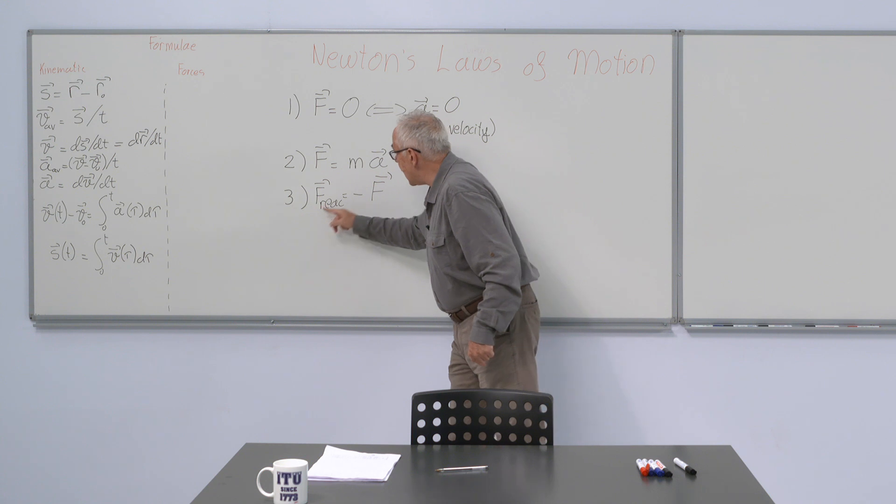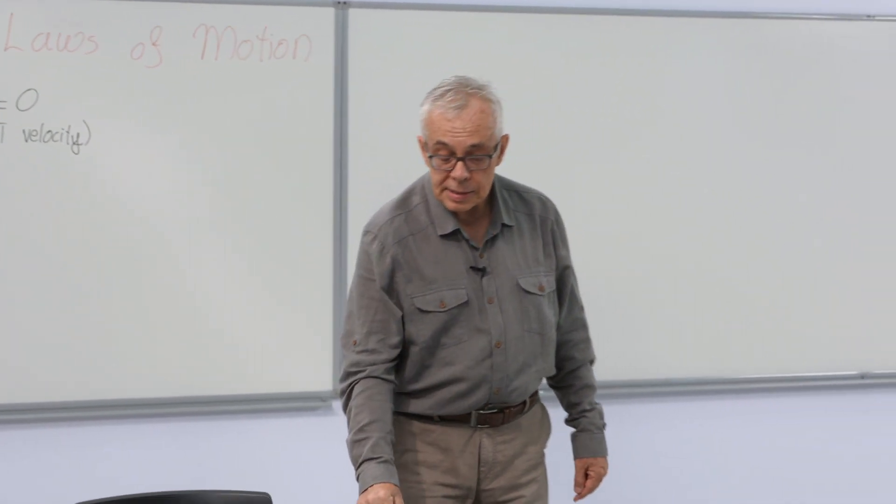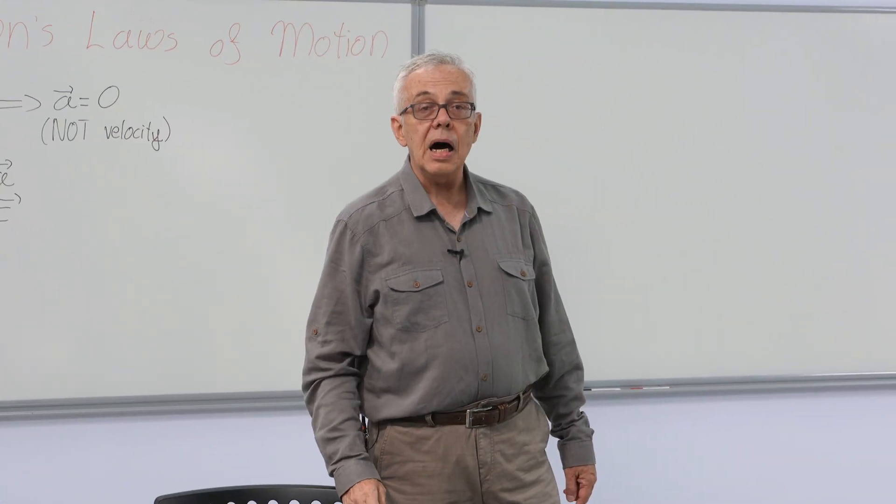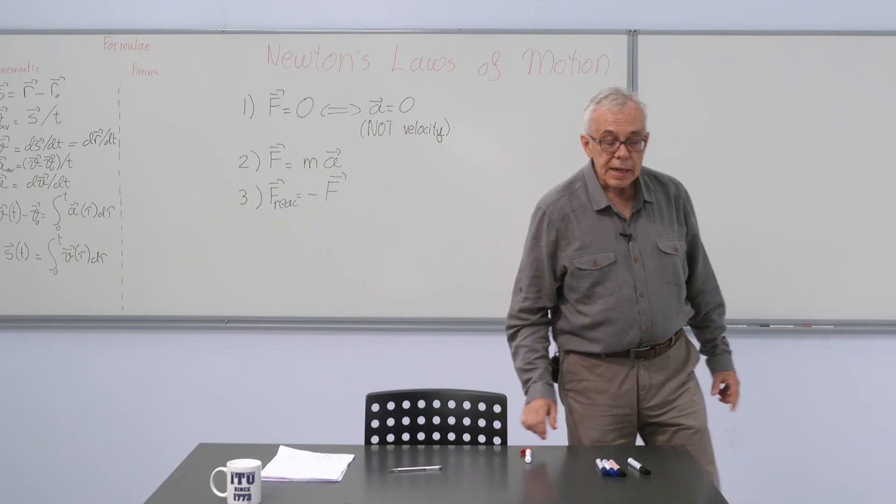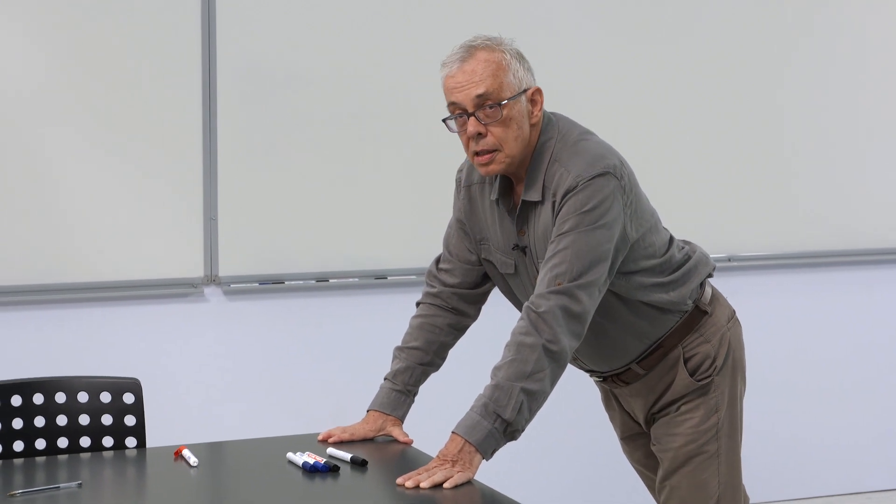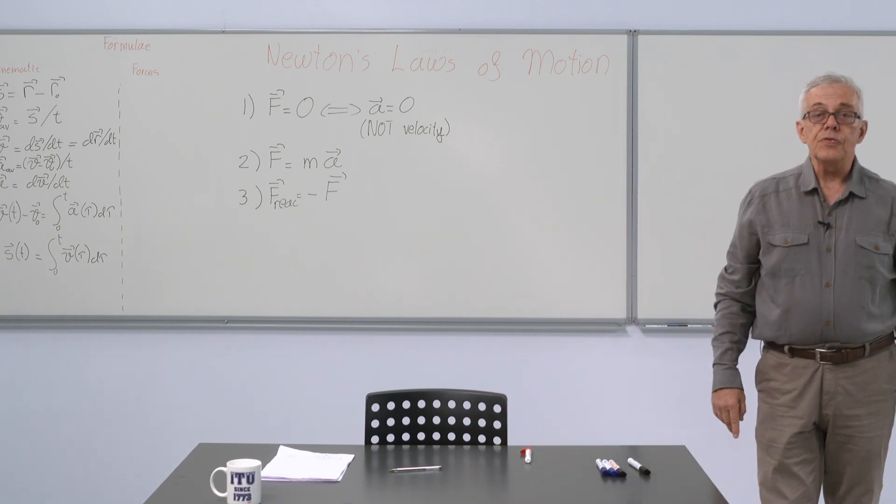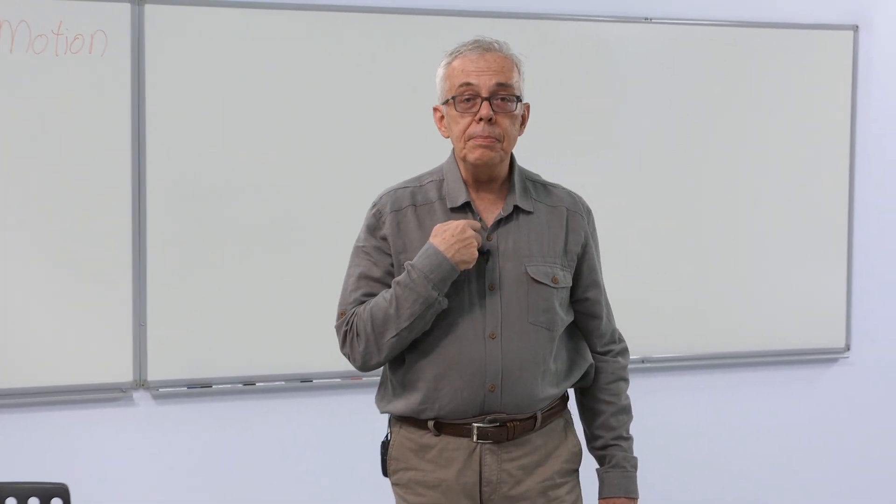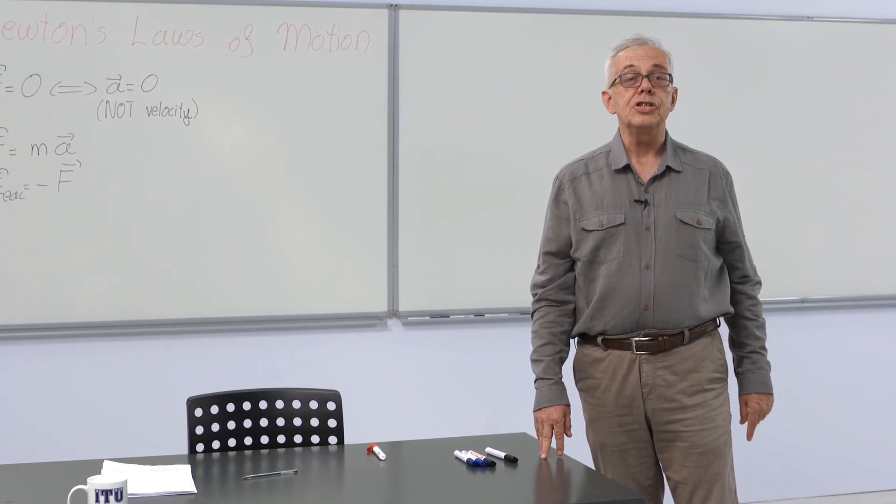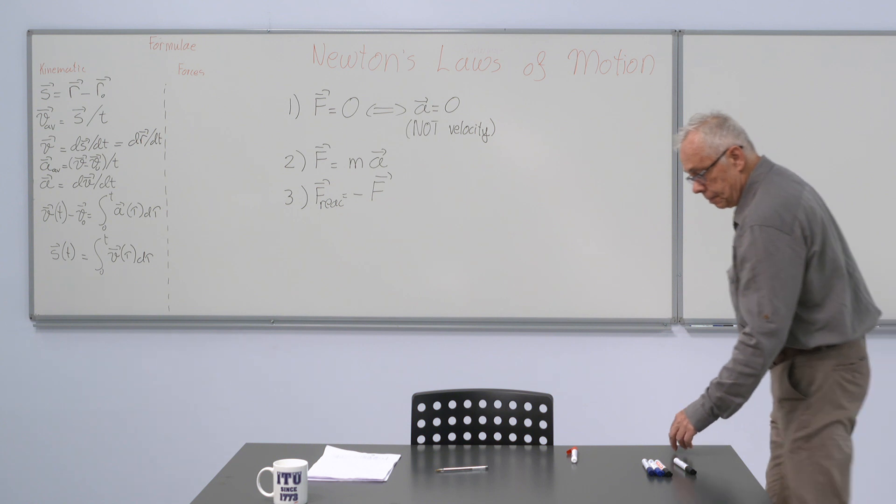It is always F-react equals minus F. Another point to note here is that the force and reactionary force are not acting on the same object. When I am pushing this table, I am exerting a force on the table, and that force will be taken into account in the acceleration of the table. The force that table exerts on me is to be taken into account when you are doing my acceleration budget. So you do not add these together.